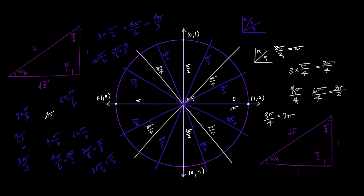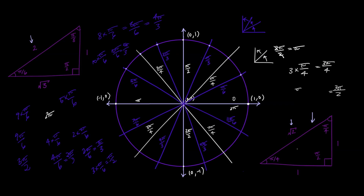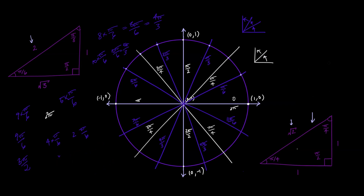Moving on, to figure out the coordinates of where all these angles hit the edge of the circle, we use our special triangles. Because this is a unit circle, every time one of these lines hits the edge of the circle, you need to have traversed a distance of 1 — so all of these lines have a length of 1. This introduces a problem because we need the hypotenuse of all the triangles we draw inside the circle to equal 1.